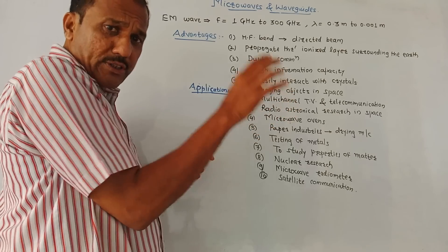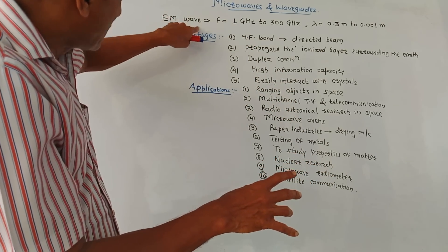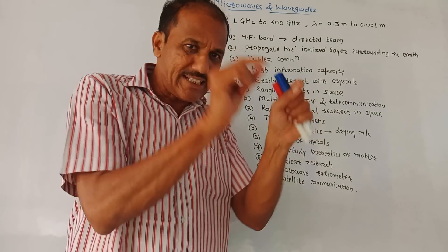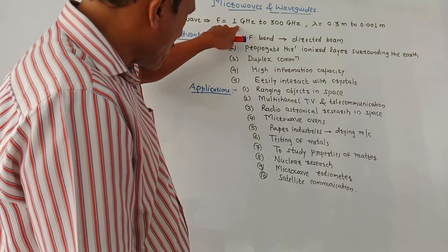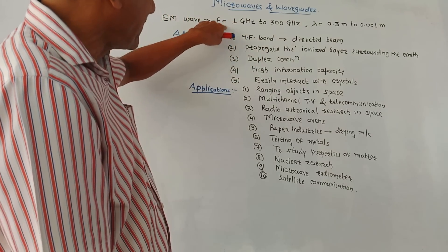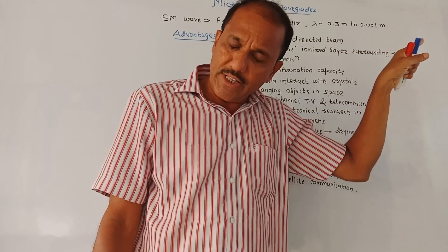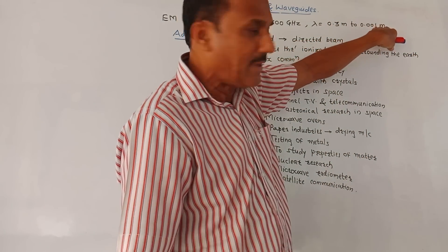First we will talk about the definition of microwaves. Microwaves are EM waves - EM stands for electromagnetic waves. So these are electromagnetic waves having the frequency range F, means frequency, having the frequency range 1 GHz to 300 GHz and the corresponding wavelength is 0.3 meters to 0.001 meters.